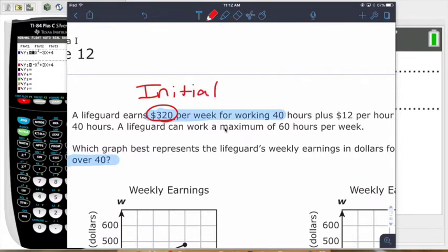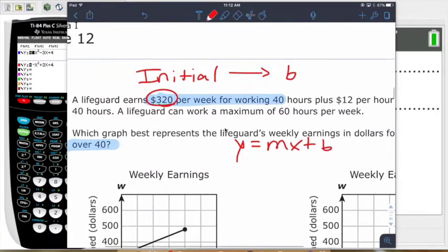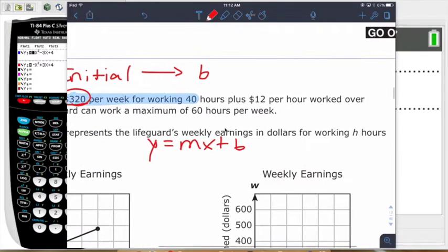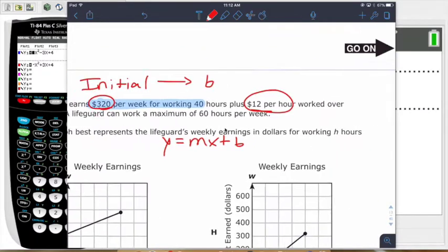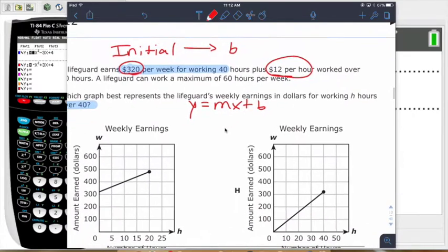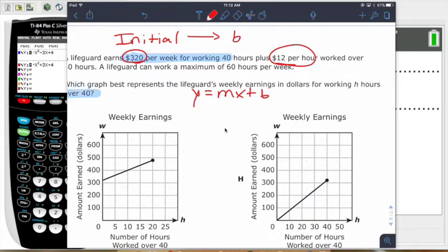And since that's our initial amount, it's kind of like a b of a graph. If we're thinking in terms of y equals mx plus b, that's the b of the graph. That's going to be consistent each week. We're making $320. Now, each hour that we go for overtime, we're getting that $12 per hour. And then we can go up to 60 extra hours.